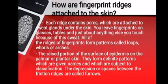How are fingerprint ridges attached to the skin? Each ridge contains pores which are attached to the sweat glands under the skin. You leave fingerprints on glasses, tables, and just about anything else you touch because of sweat. All of the ridges of fingerprints form patterns called loops, whorls, or arches. The raised portion of the epidermis on palmar or plantar skin forms definite patterns which are given names and are subject to classification. The depressions or spaces between the friction ridges are called furrows.